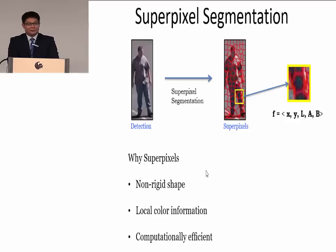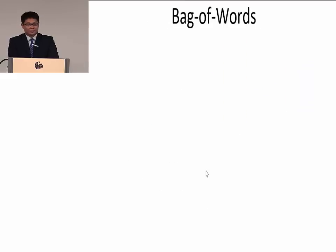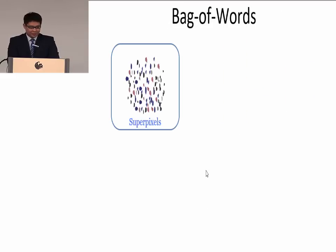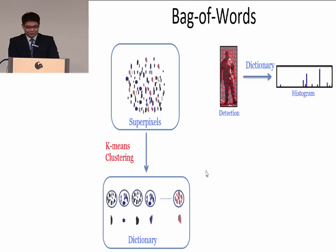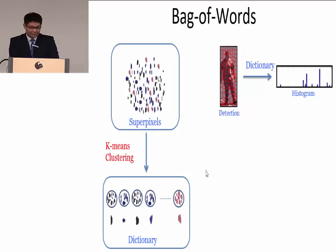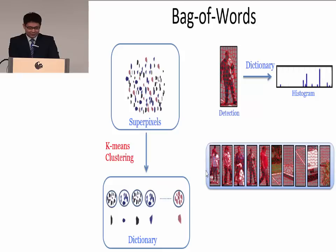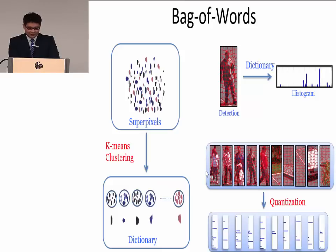Now we have the superpixels, and we need a way to convert them to a feature vector. We choose a bag-of-words approach. We extract all superpixels from detections and put them in this five-dimensional feature space. We use k-means clustering to get thousands of clusters. Each cluster is represented by an average superpixel — we call them a dictionary. We use the dictionary to convert the detection into a histogram, where the x-axis is the dictionary index and the y-axis is the number of superpixels. These histograms are normalized and used as feature vectors for SVM training and classification.